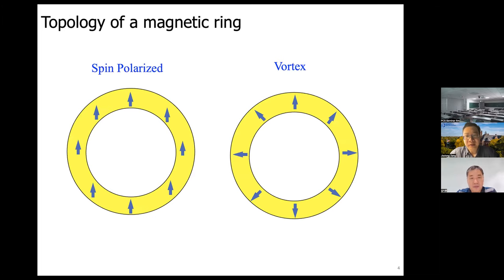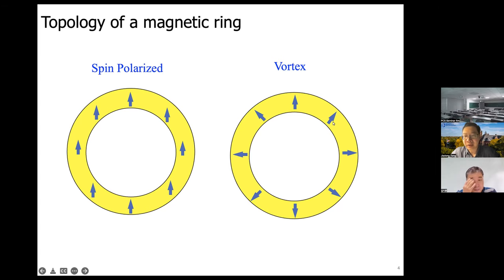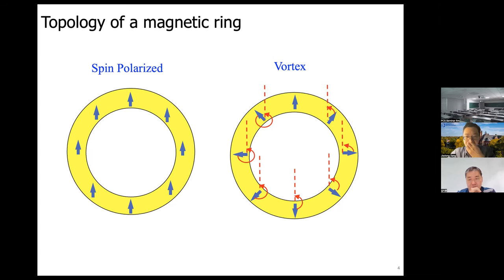The topology of the skyrmion mechanism can be traced back to the topology of a magnetic ring. If we confine spins to a plane, there are two spin configurations: spin-polarized, and the vortex state where spins fan out. Transferring from vortex to spin-polarized requires rotation, but the rotation angle is not continuous across a nodal point, so there is no continuous transformation between these two configurations — this indicates topological inequivalence.